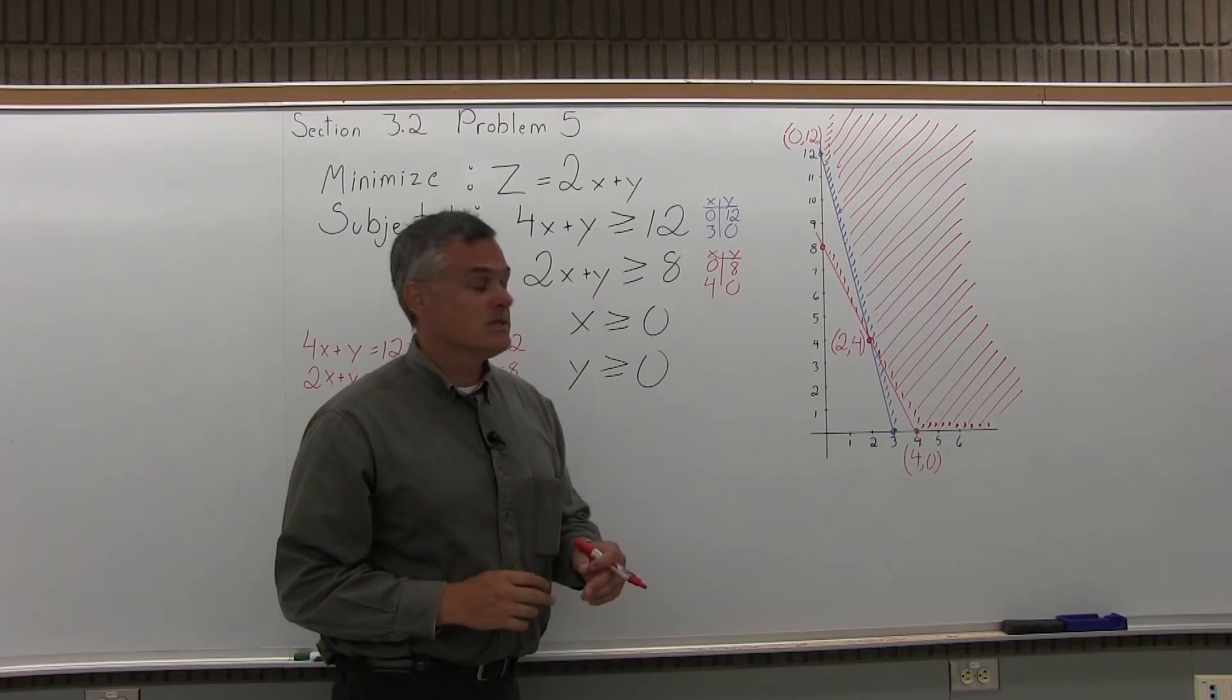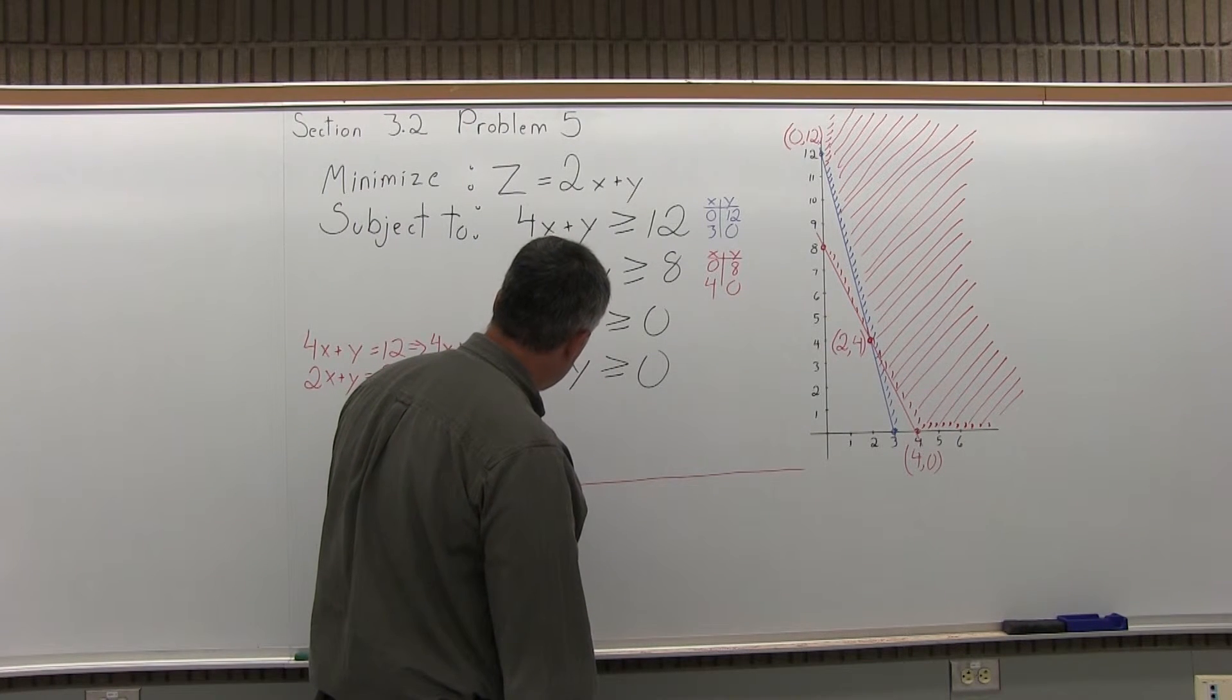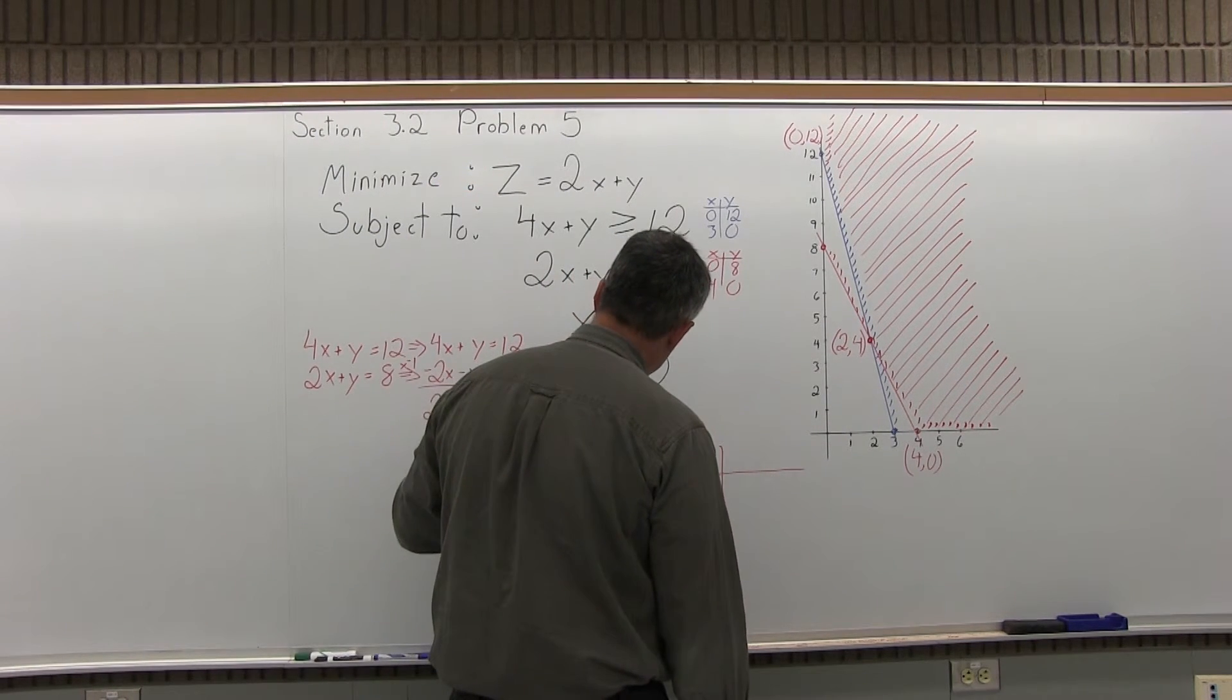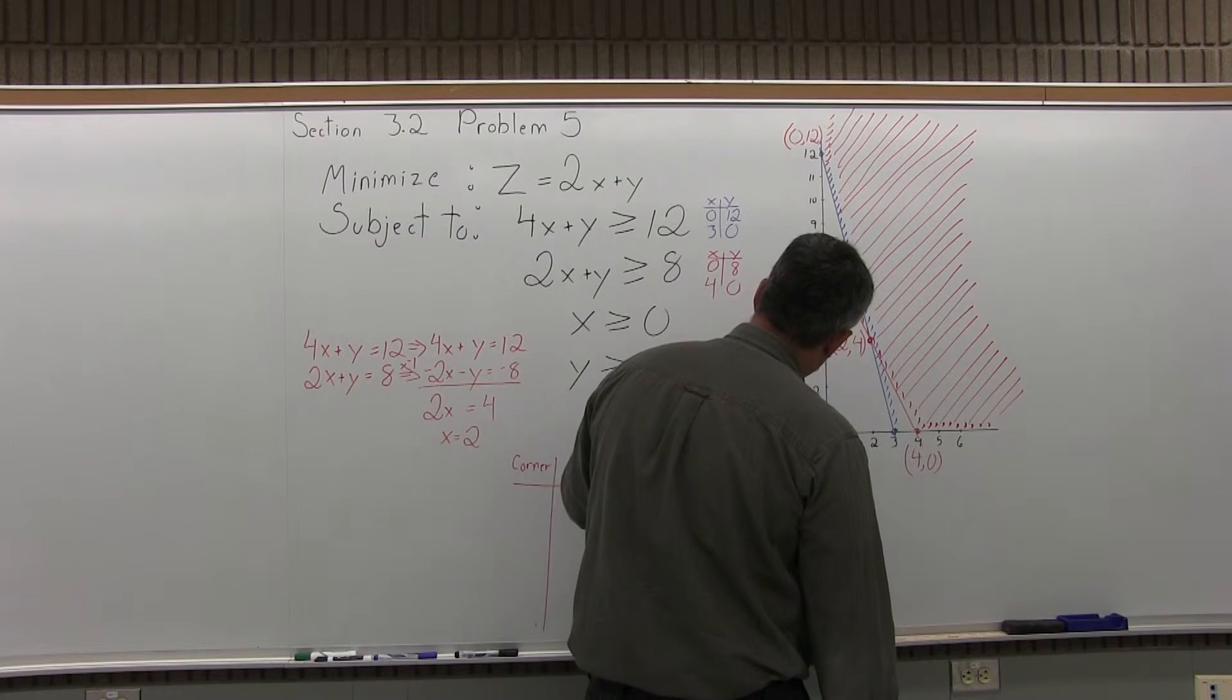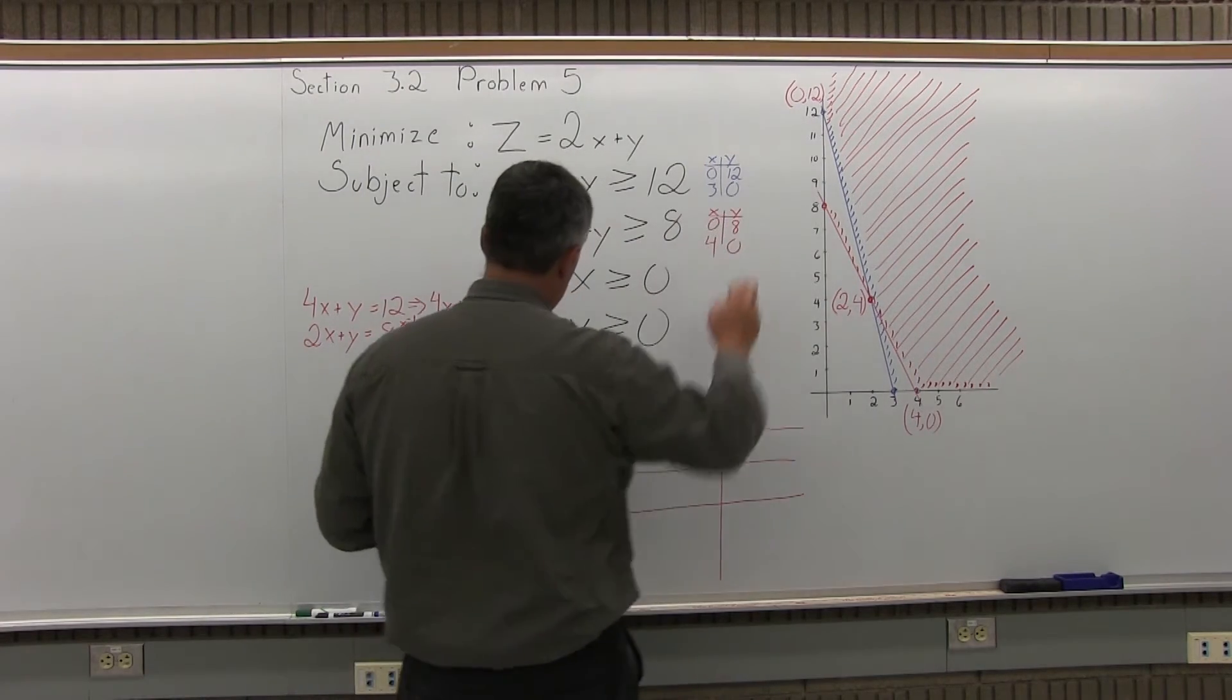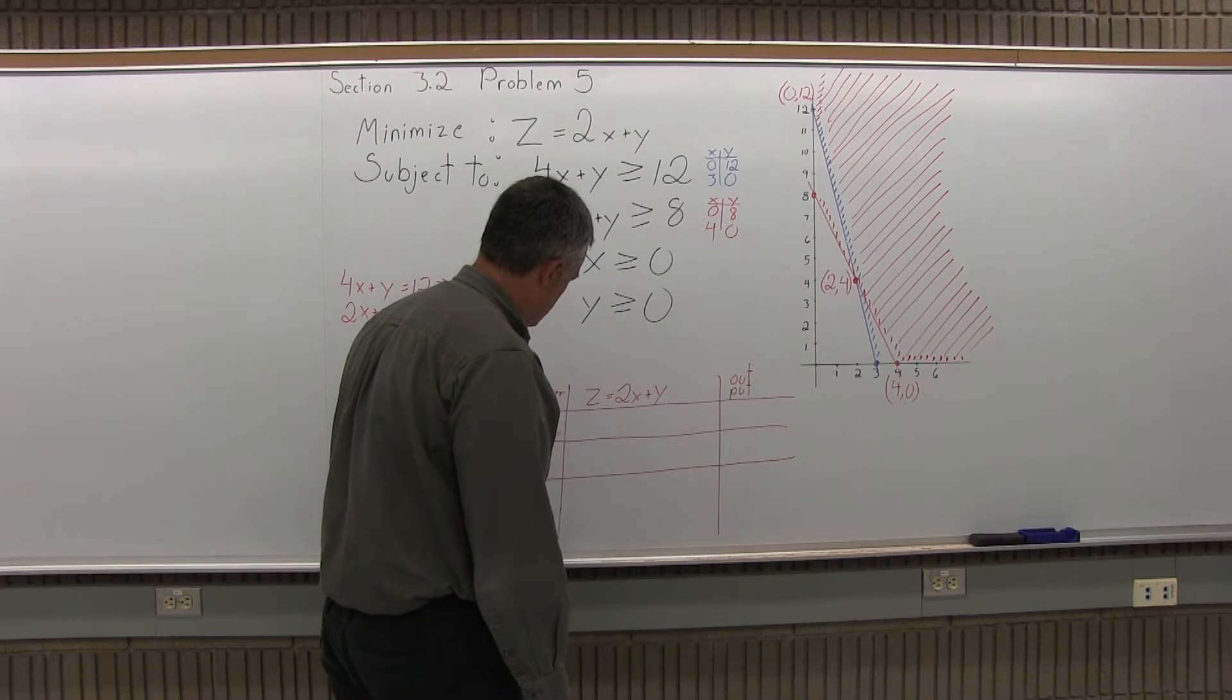So now, step 2 of my 4-step process is label the corner points. I have them labeled. Step 3 is fill in that chart. So let's set up the chart. One column, the first column is for the corner points. The middle column I leave a little bit wider. That's for the object function. So for this particular problem, my object function is z equals 2x plus y. And the last column is for output. So I only have 3 corner points. So I only need 3 rows. One of the corner points is 0, 12. Another corner point is 2, 4. And the last corner point is 4, 0.